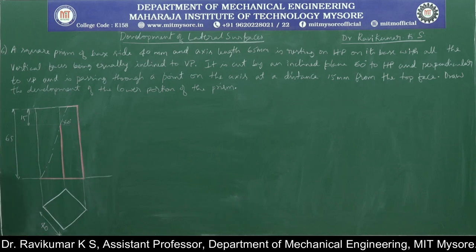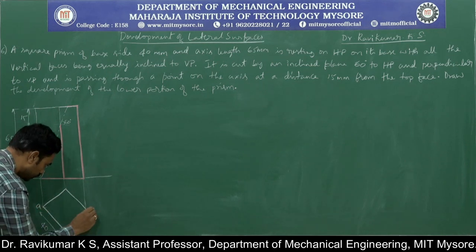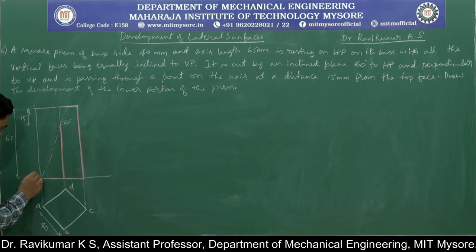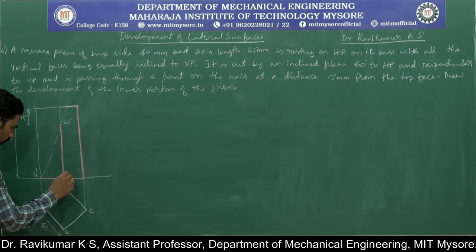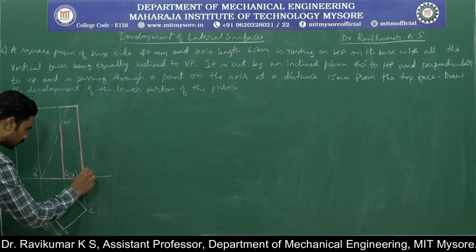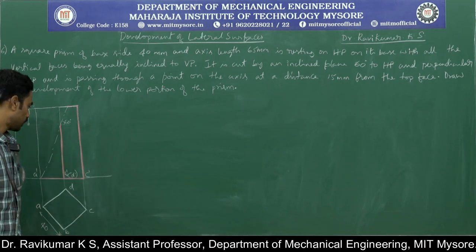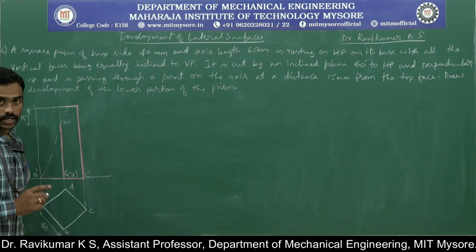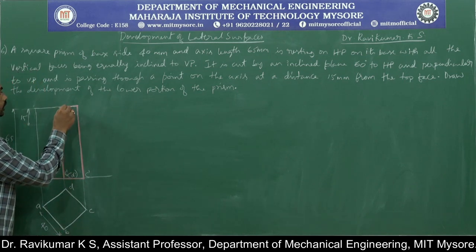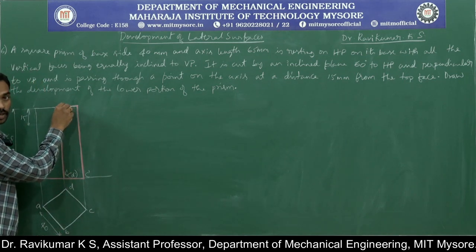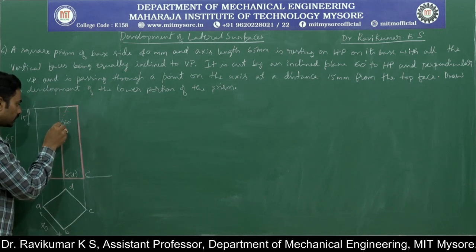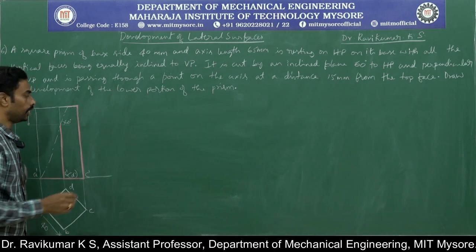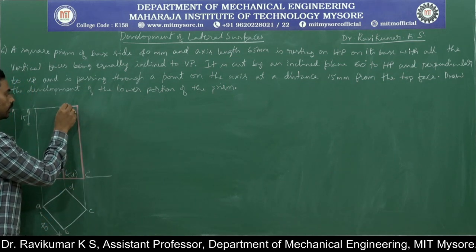Now I need to name the edges: A, B, C, D. Starting from this particular point — A, B, C and D — so the top edges become A dash, B dash, D dash, and C dash. One important observation: the section plane is cutting the lateral edges at certain points, but it is also cutting the base edge at a particular point.